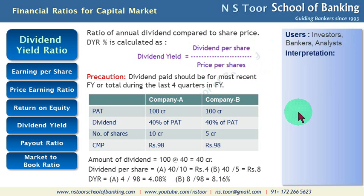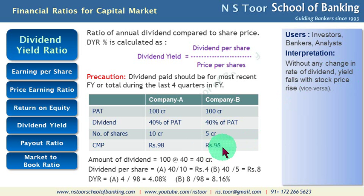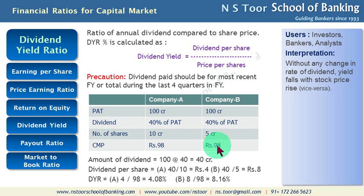How is this ratio interpreted? Without any change in the rate of dividend, yield falls when stock price rises — so whenever there is an increase in stock price, if it increases to say Rs. 200, the ratio will fall without any change in dividend. Similarly, if the price of the share comes down with the same dividend paid, the ratio will increase.